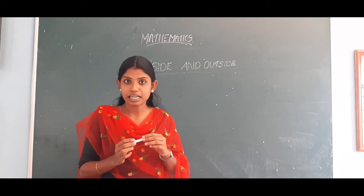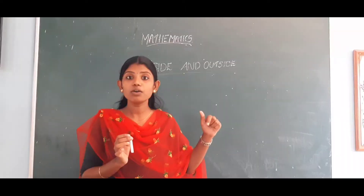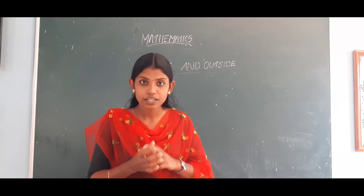We can look at a few more examples. Now it is papaya seed and strawberry seed. Papaya seeds, which are black in color, are covered with the fruit — the seeds are inside the fruit. Whereas in the strawberry, the seeds are outside.